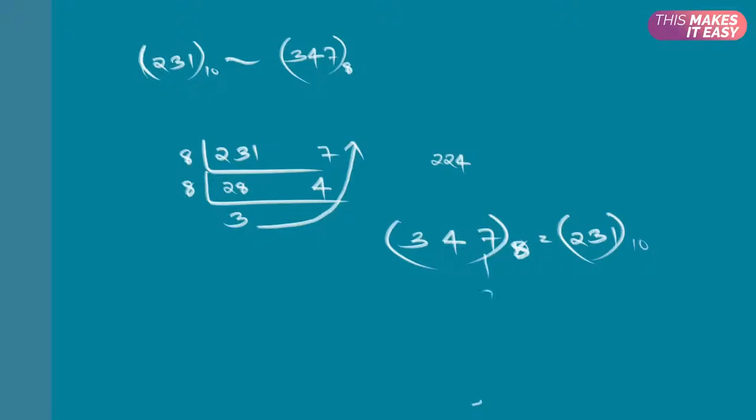The base is 8^0, 8^1, 8^2. This is 1, this is 8, this is 64. If we multiply 3 times 64 plus 4 times 8 plus 7 times 1, we will get 231.